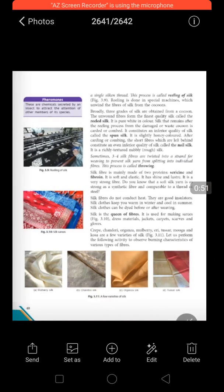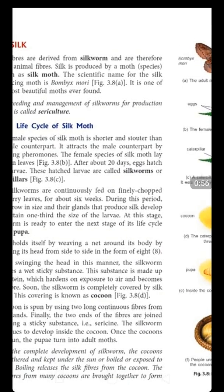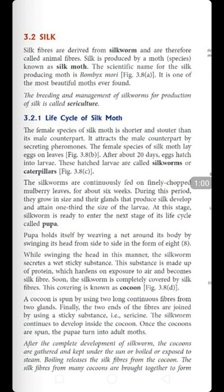Silk fibers are derived from silk worms, as shown in the picture. Therefore, silk is an animal fiber because we are extracting it from a worm - an animal source. Silk is produced by a moth known as the silk moth. The scientific name for the silk worm is Bombyx mori - this is very important to learn. It is one of the most beautiful moths ever found. The breeding and management of silk worms for the production of silk is called sericulture.